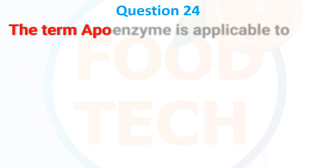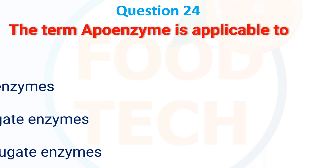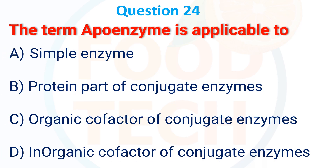The term apoenzyme is applicable to: A. simple enzyme, B. protein part of a conjugate enzyme, C. organic cofactor of conjugate enzyme, D. inorganic cofactor of conjugate enzyme. The answer is B, protein part of conjugate enzyme.